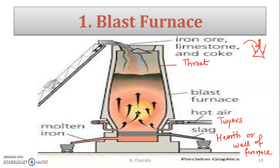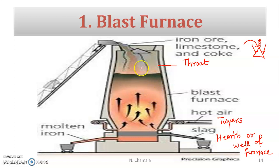This cup and cone arrangement is there to avoid the exit of hot gases outside the furnace. The temperature is very high — red hot — in the blast furnace, so to avoid hot gases escaping outside, the cup and cone arrangement is placed at the top of the furnace.